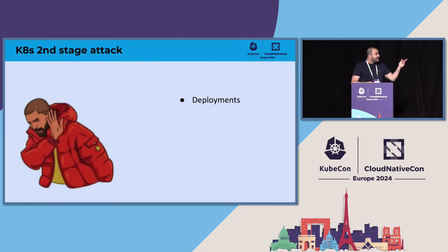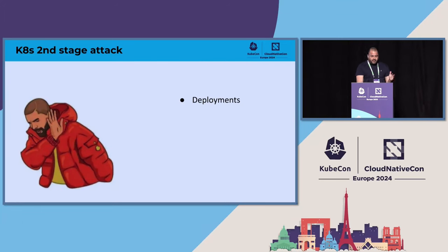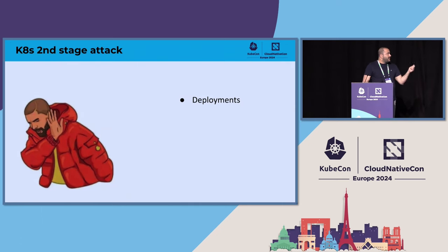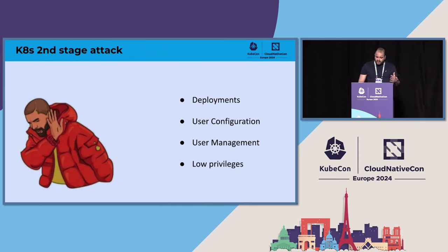As an attacker, I probably won't focus on deployment pods, because deployment pods handle application instances, and compromising them probably won't allow me to access infrastructure within the cluster. And I really don't know where I'll land in the cluster, so there's no guarantee I'll encounter deployment pods. Same for user configuration and user management pods — the chance of finding misconfiguration or vulnerability in well-configured, well-managed pods is significantly reduced. And low-privilege pods won't help either, since our goal is to escalate privileges and gain a higher level of control within the cluster.